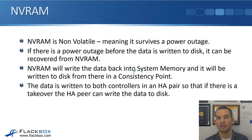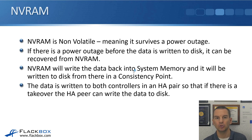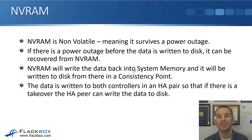The data is written to NVRAM on both controllers — the primary and its HA peer — so that if there's a takeover, the HA peer can write the data to disk. If Controller 1 fails and Controller 2 takes over, Controller 2 needs to have all the data available, which is why we write NVRAM to both locations.